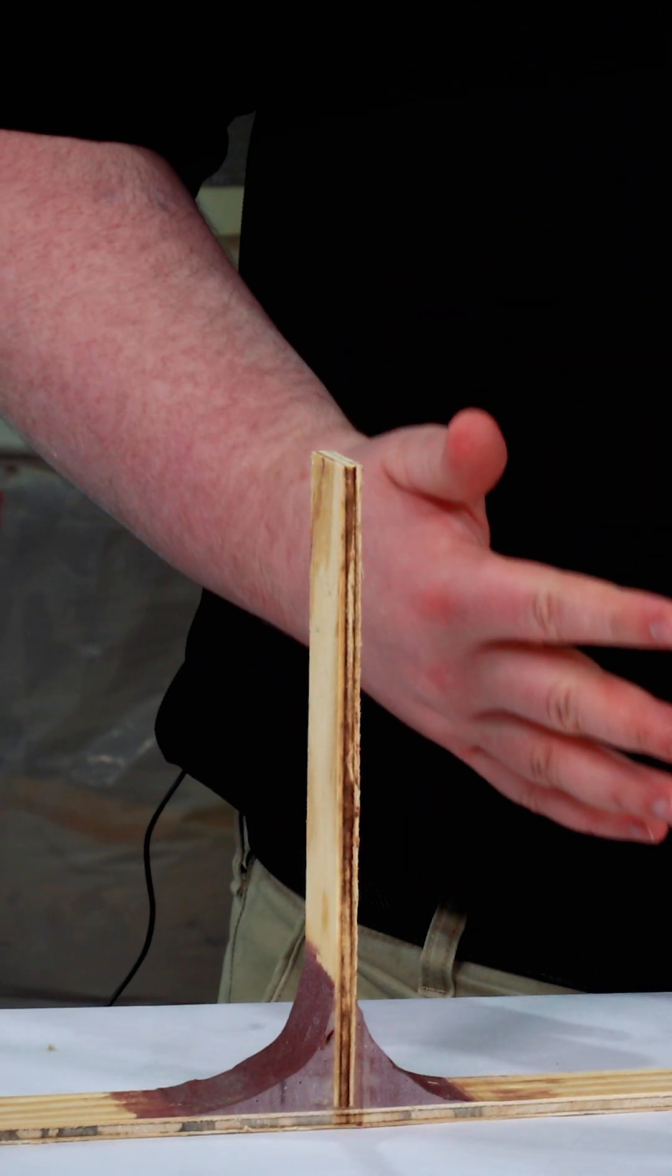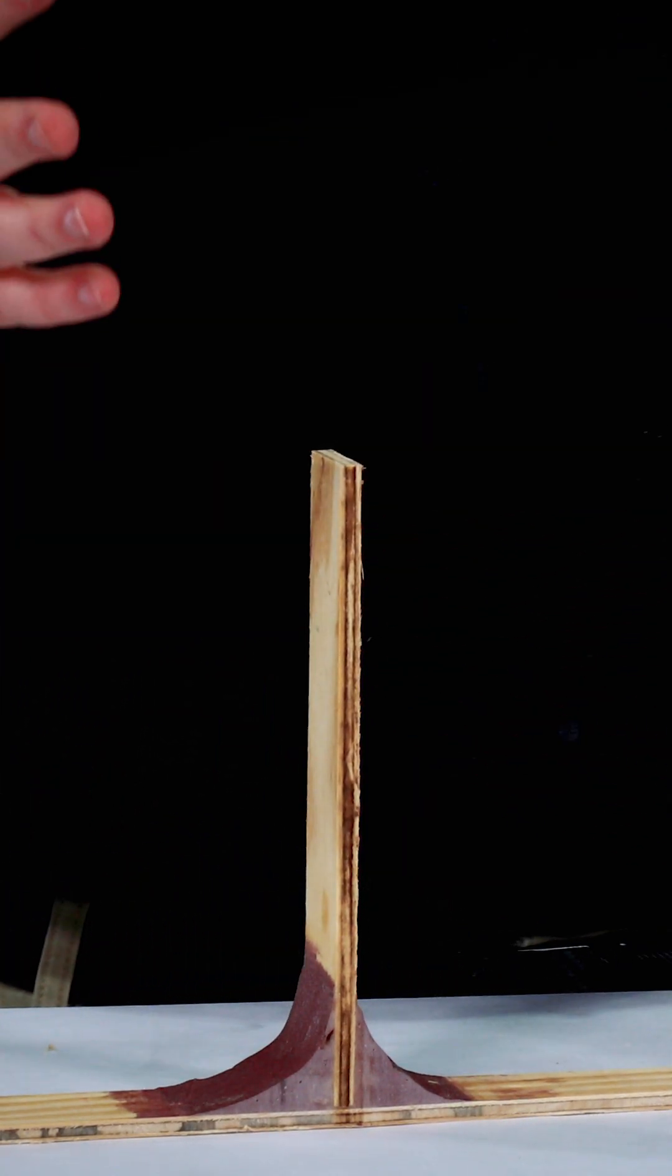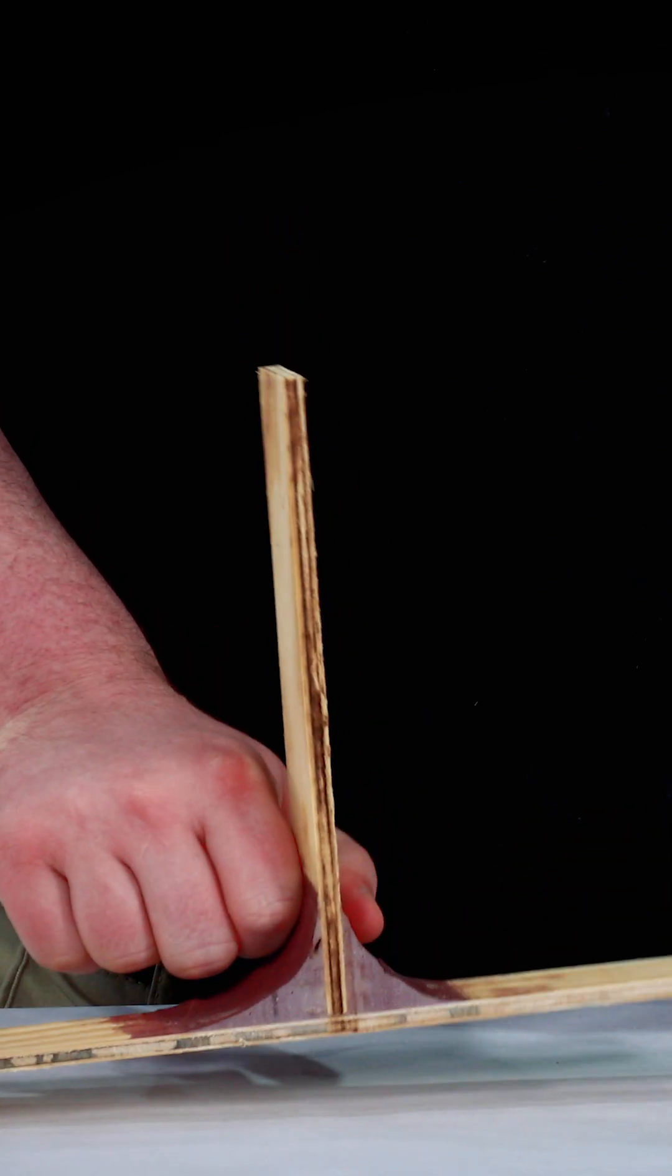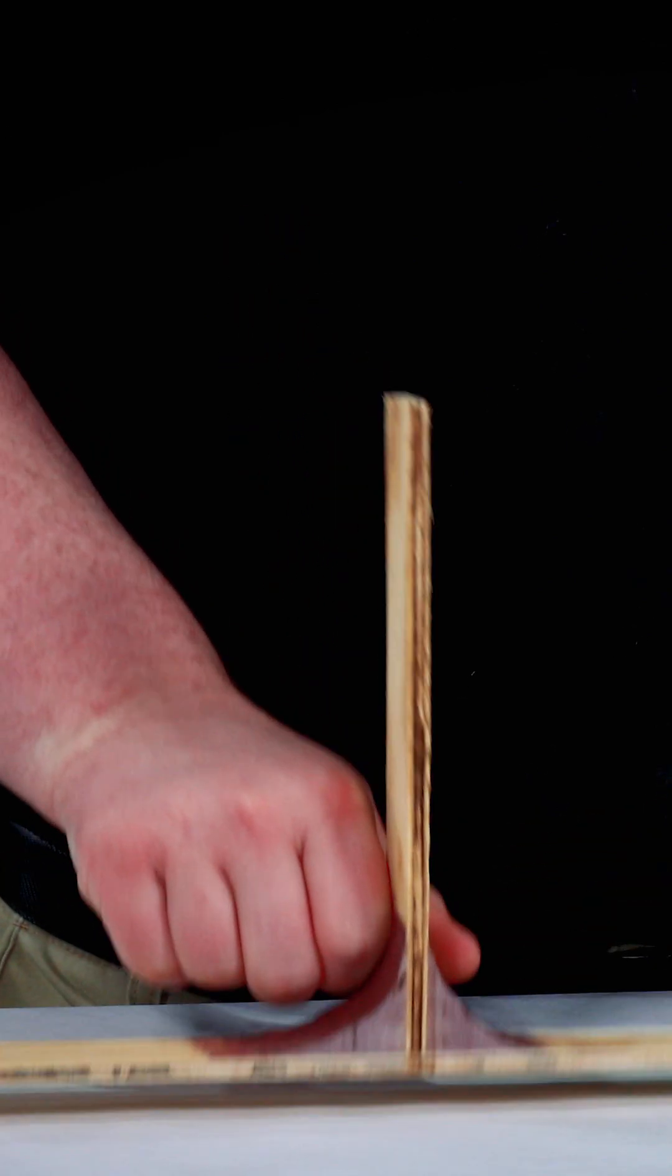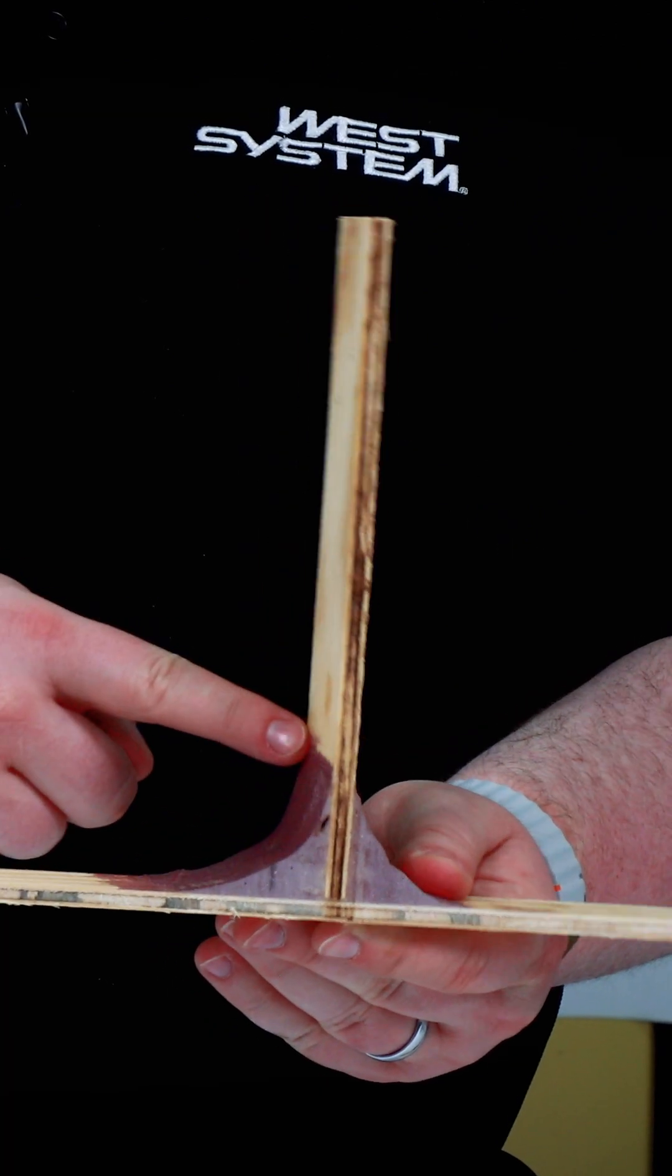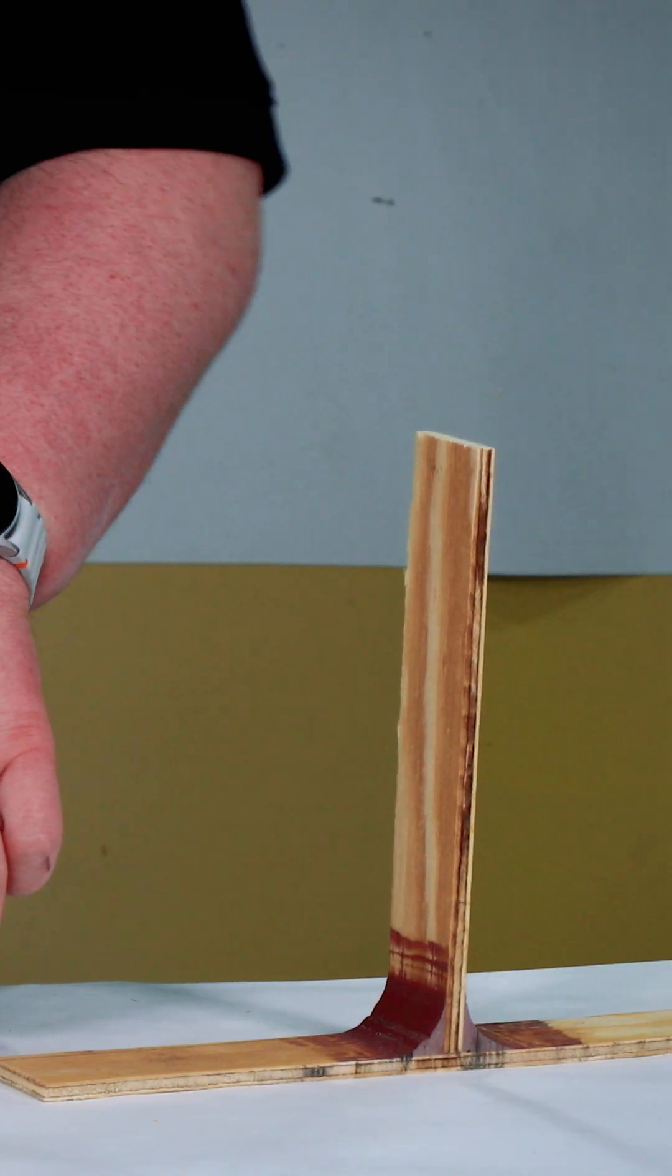To demonstrate the impact that the size of a fillet has on the failure method, we have two different sized fillets made with our 407 low-density filler. In an appropriately sized fillet, we would expect to see the wood crack right above the fillet that we made.